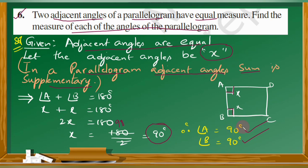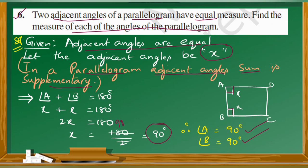Now let us move on to the next question, that is question number 7. The adjacent figure HOPE is a parallelogram. Find the angle measures X, Y and Z, and state the properties you use to find them.